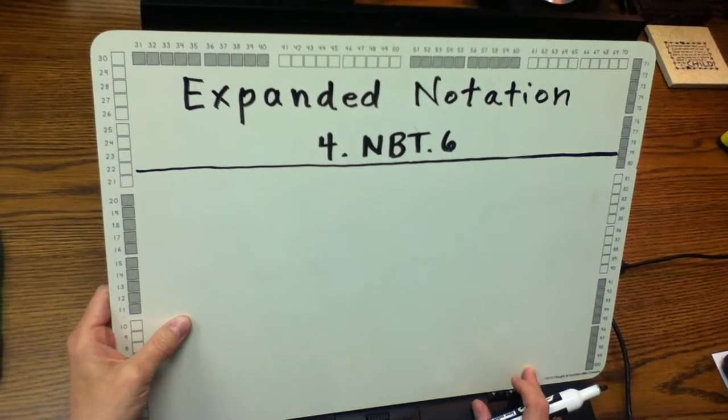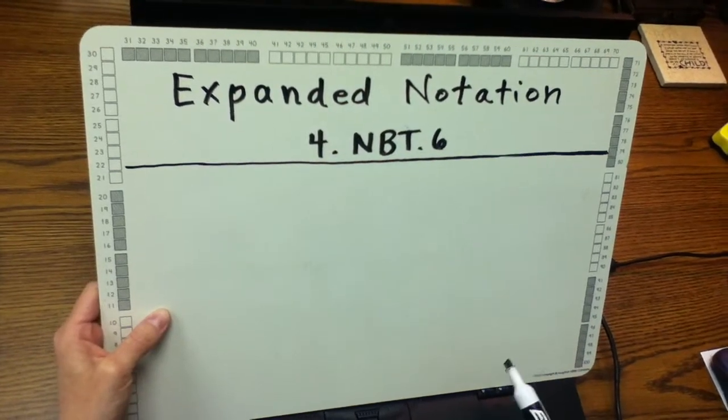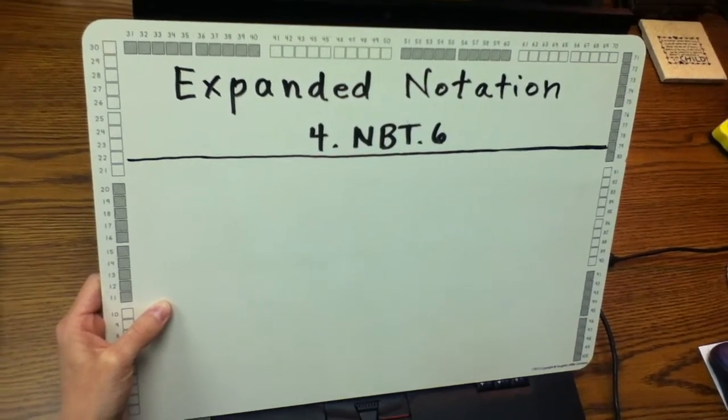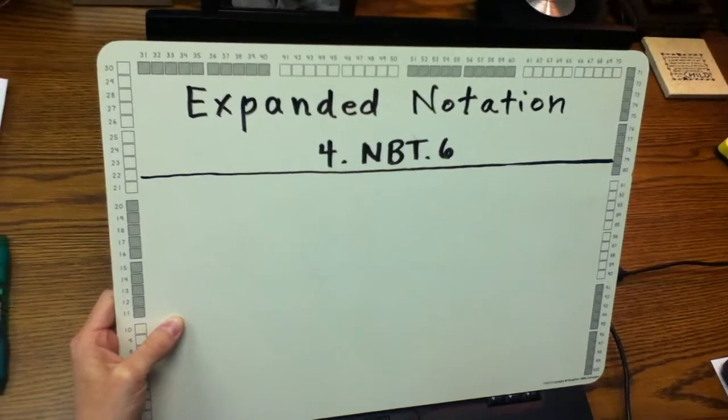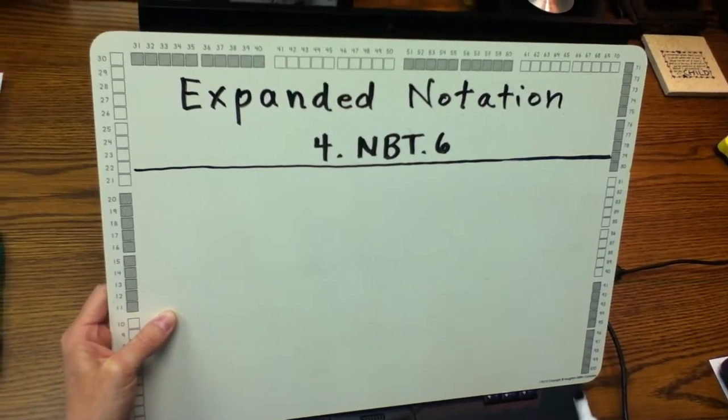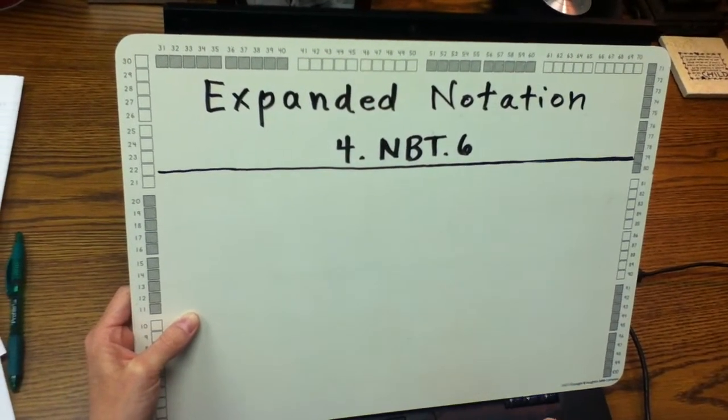The expanded notation method uses the long division bracket. The quotient is built place value by place value above the bracket, so each place value is represented by a number rather than by a digit, like in the standard algorithm. So it'd be 700 when you see the quotient above instead of 7.